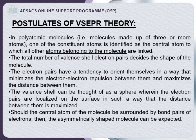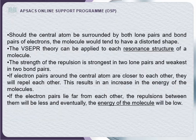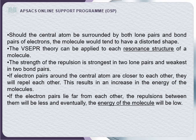The valence shell can be thought of as a sphere on whose surface electron pairs are localized such that the distance between them is maximum. When more than one pair of electrons is present, the symmetry of the molecule is affected. The central atom may be surrounded by both bond pairs and lone pairs — bond pairs are the bonded electron pairs present between the central atom and the bonded atoms.